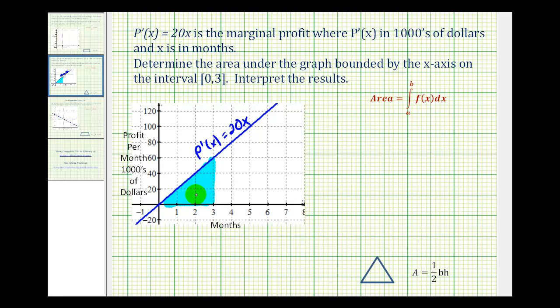And since this region is a triangle, we can use the area formula for a triangle to determine this area, where the base in this case would be three units, and the height of the triangle, since this is a right triangle, would be the y-coordinate of this point, or 60 units.